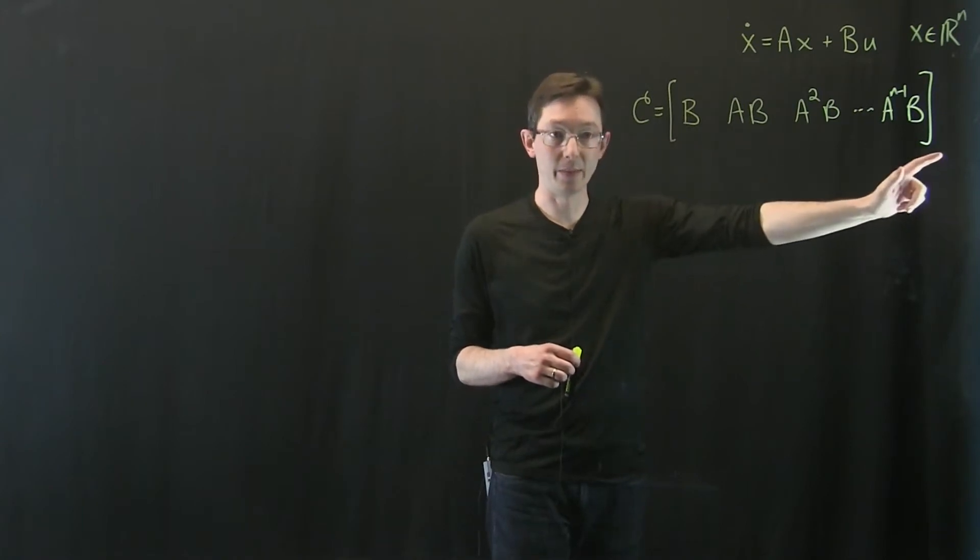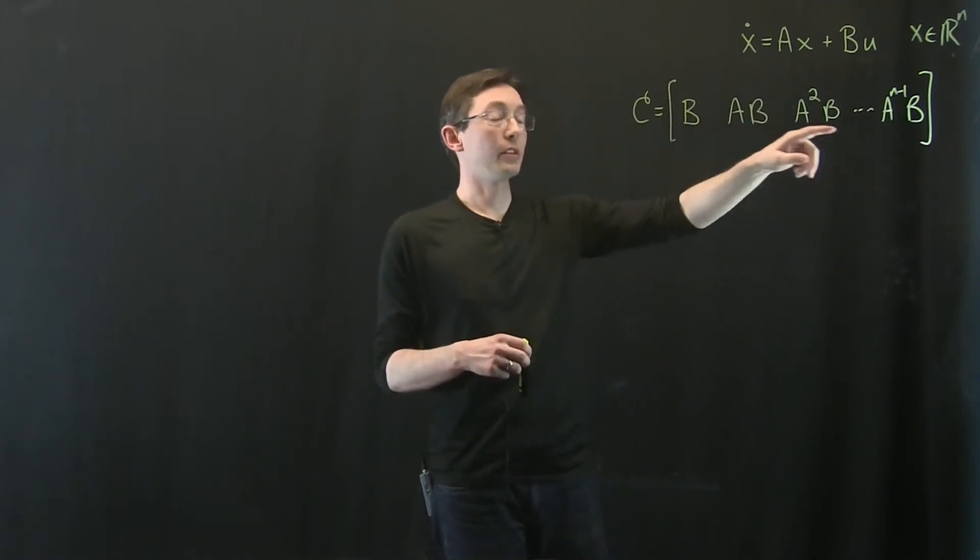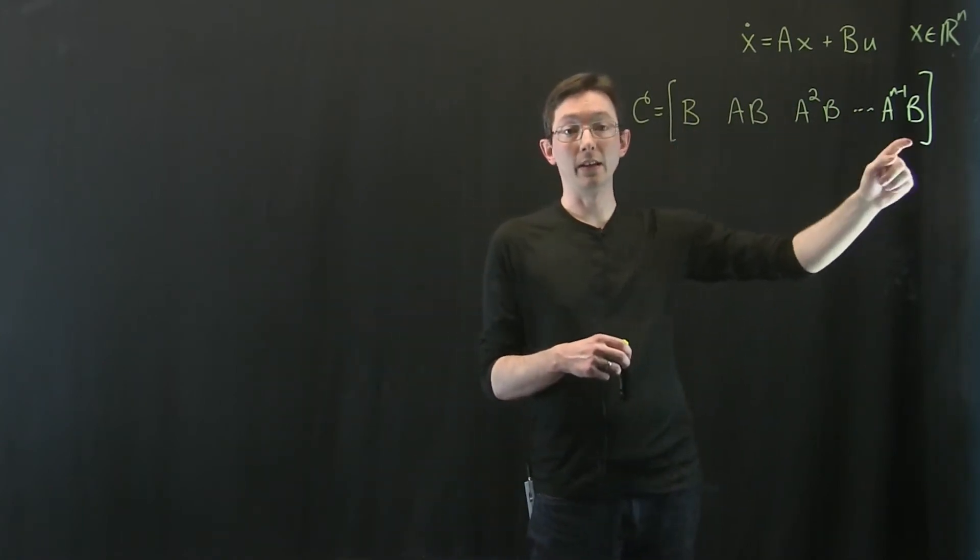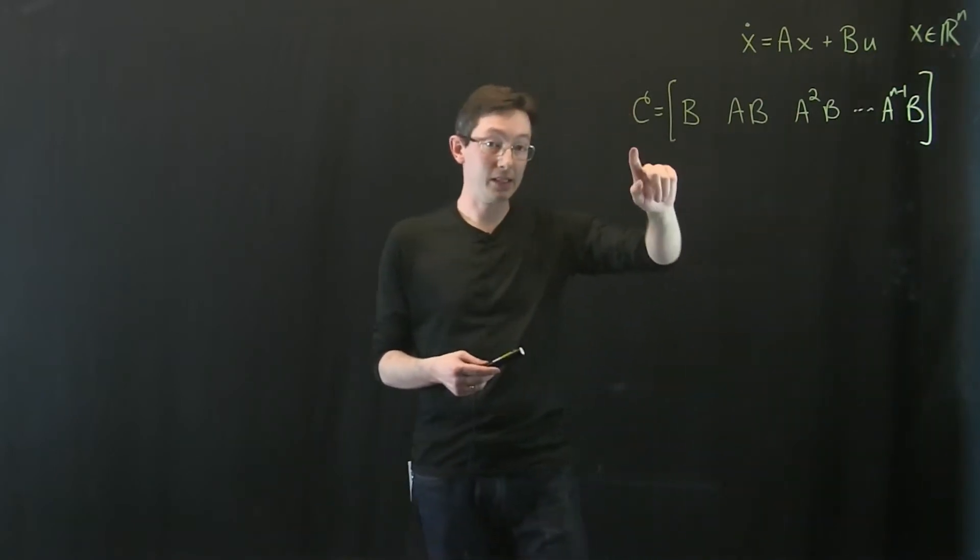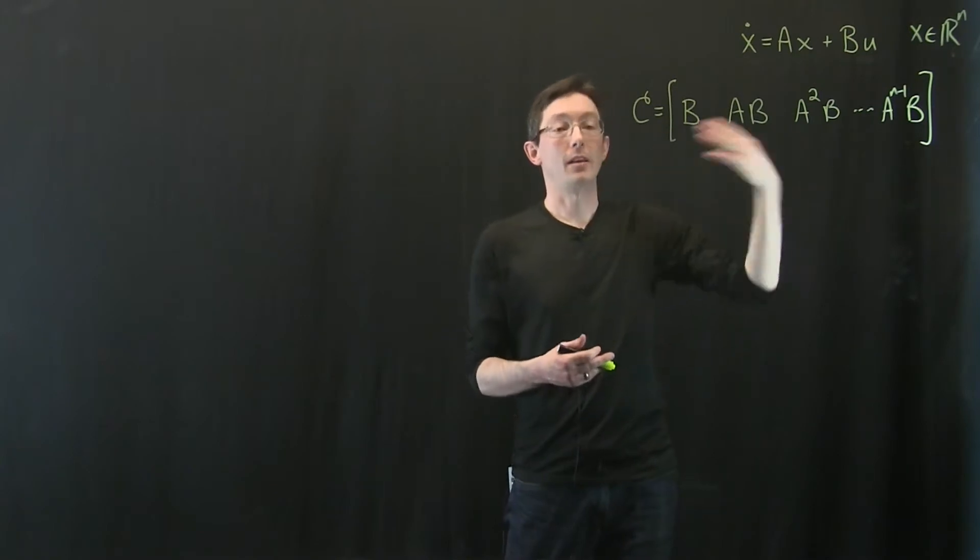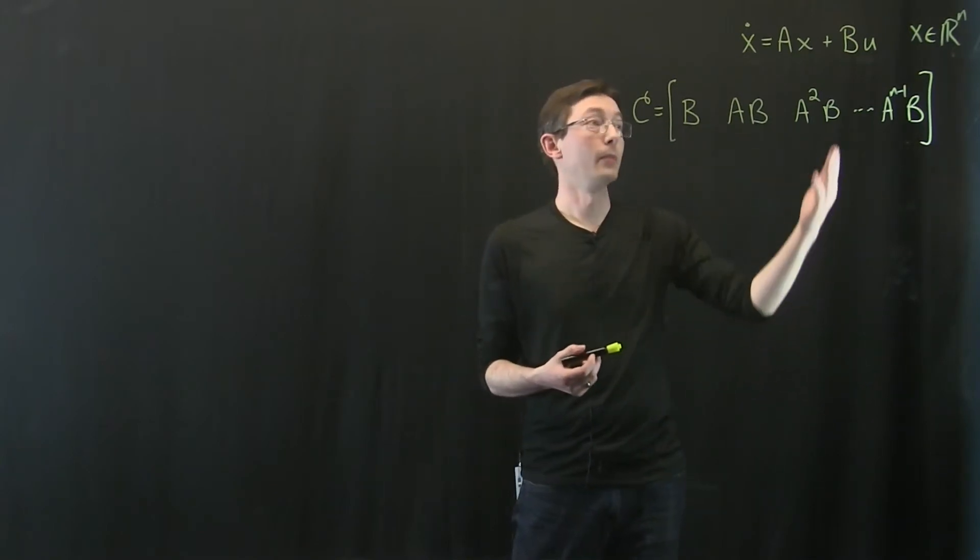Namely we build this controllability matrix here and we make sure that this has n linearly independent columns where n is the dimension of my state space, and if this thing has a rank of n then my system is controllable and that means a lot of things.